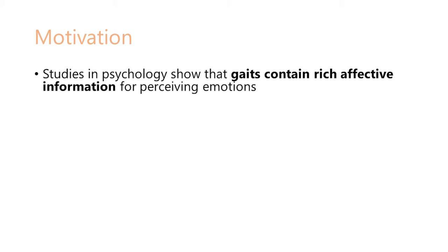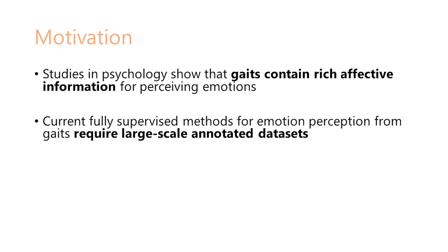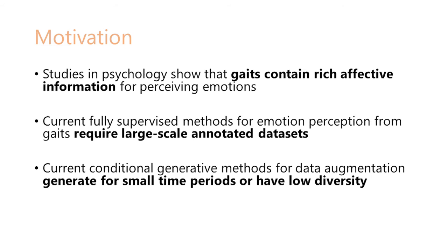Gaits have been well studied in psychology as a non-verbal modality for emotion perception. These studies have shown that observers were able to perceive the emotions of walking subjects by perceiving features such as arm swinging, stride lengths, collapsed upper body, etc. However, there are a few key challenges in designing machine learning methods for emotion recognition using gaits. Fully supervised methods require large-scale annotations which are expensive and tedious to collect. Large-scale label data augmentation is possible with conditional generative methods, but current methods can only generate data for short time periods or with relatively low diversity.